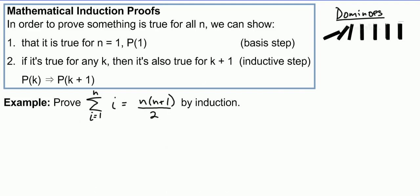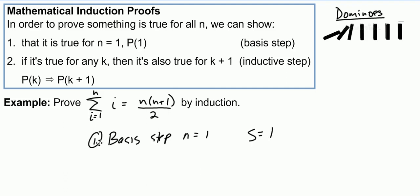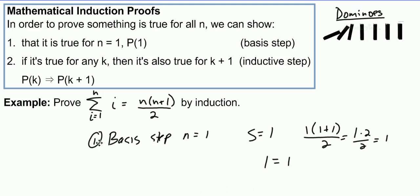So we're going to take a look at an example here. This is one of the classic examples: to prove that the sum of the first n integers is given by n times n plus 1 over 2. We're going to do this proof by induction, starting first with the basis step. The basis step is n equals 1. If we add up just the first integer, we get the sum equals 1. And 1 times 1 plus 1 over 2 is 1 times 2 over 2, which is 1. So 1 equals 1, and therefore our basis step is true.